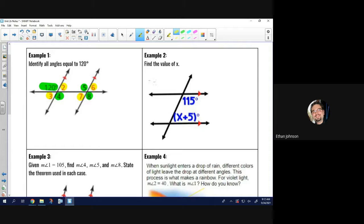Now, I'll read the problem. It says, identify all angles equal to 120 degrees. So, I'm going to scan my problem, find 120. Well, that's at the top left in green. So, I know all of my green angles have to be 120. So, that's angle 4, angle 5, and angle 8. Angle 4 is a vertical angle to 120. Angle 5 is a corresponding angle to that 120. And angle 8 is an alternate exterior angle for that 120.